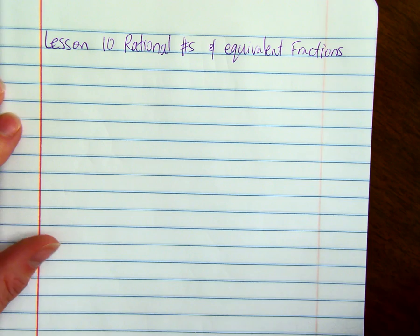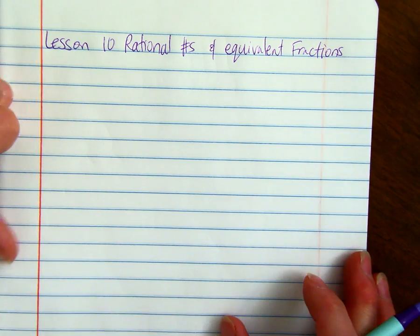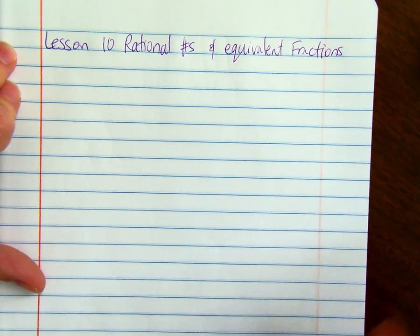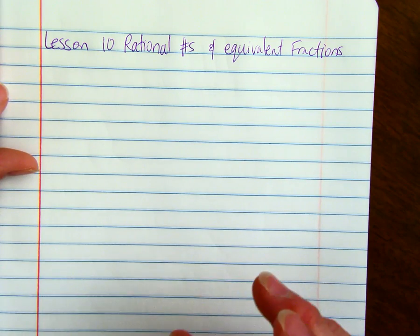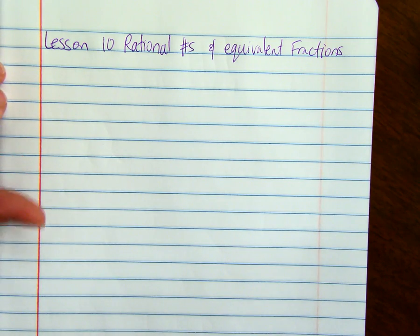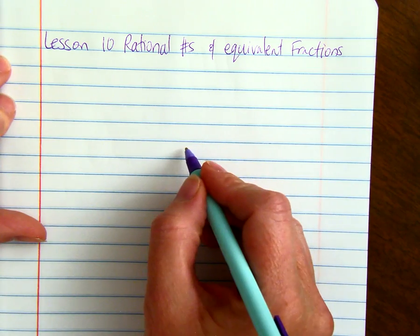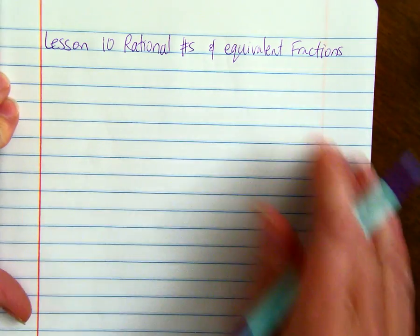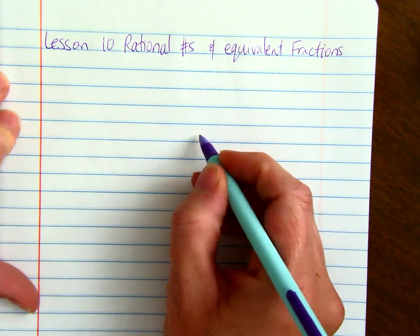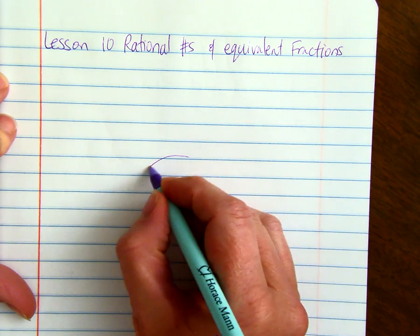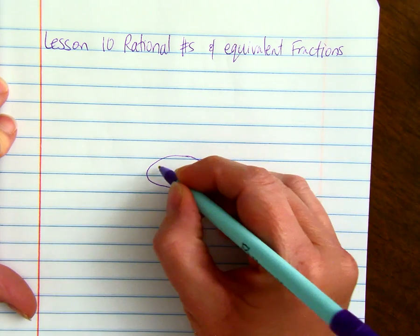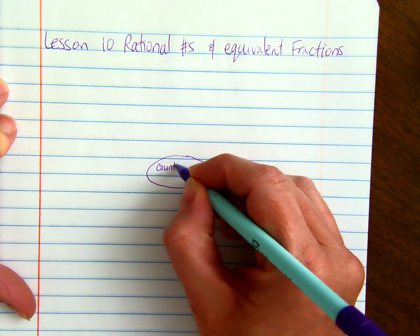Today we're going to go over the set of rational numbers. Starting with the smallest set, which we have right now, that's the counting numbers. We're going to make the big circles here. We'll start with a smaller one down a little bit.